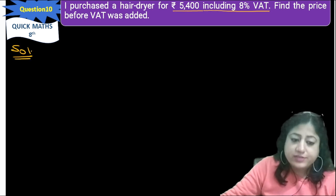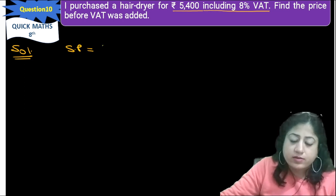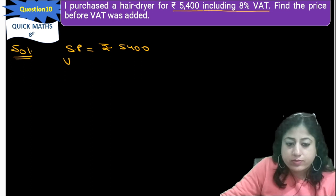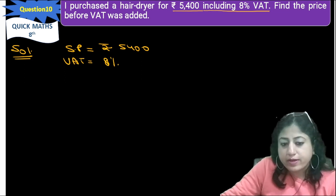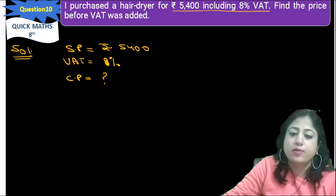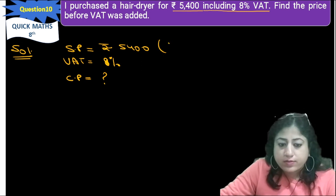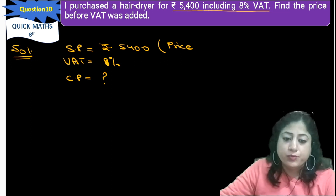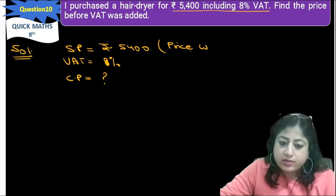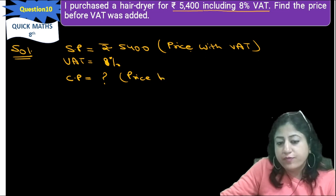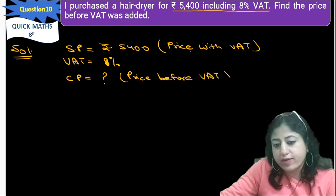Here, the original price is to be known. SP is 5,400 including VAT 8%. We can use CP for the original price — CP is to be determined. We will denote price with VAT as SP and price before VAT as CP, so it will be clear.